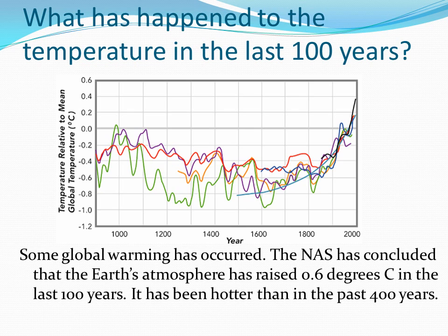What has happened to the temperature in the last 100 years? When viewed together, the temperature proxy data sets strengthen the case for global warming. The National Academy of Science reported to Congress in 2006 that Earth's atmosphere has warmed 0.6 degrees centigrade in the last 100 years and that the last few decades have been hotter than any time in the last 400 years.